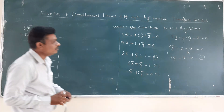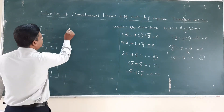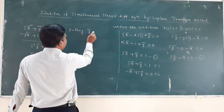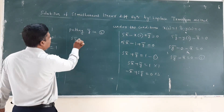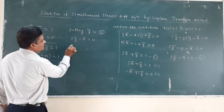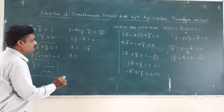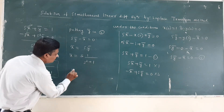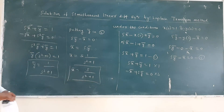So now I will find the value of X̄. I will put the value of Ȳ in equation number 2. Equation 2 is s·Ȳ - X̄ = 0, so X̄ = s·Ȳ. The value of Ȳ is 1/(s² + 1), therefore X̄ = s/(s² + 1).